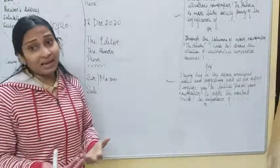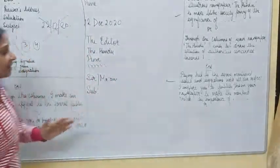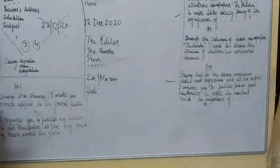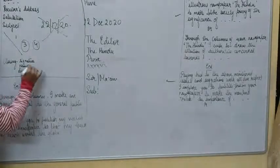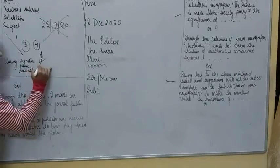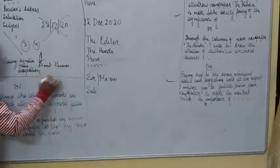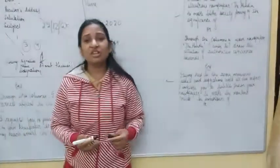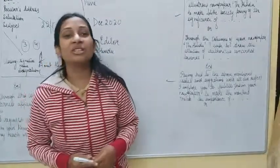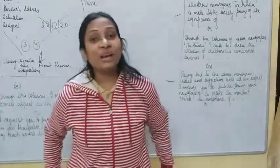At the end of the letter comes the signature, your name, and your designation. Suppose you are Amit/Amita — if you are a boy, select Amit; if a girl, select Amita. You can even put the surname. If there is no designation — if you are not the chairman of any society — then write 'A Responsible Citizen' as your designation.